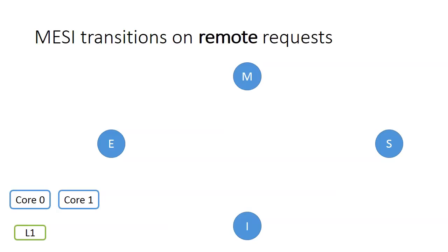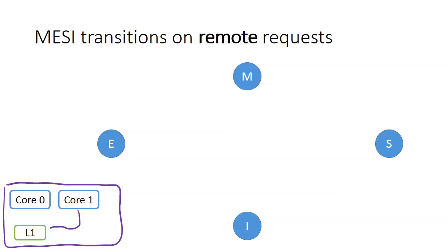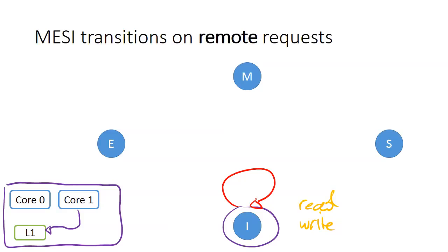Now let's see the transitions of the MESI protocol when the cache line receives coherence events from a remote core. Imagine that core 1 is performing operations that trigger coherence messages to a cache line in the L1 of core 0. Starting with the invalid state, it doesn't matter whether core 1 wants to read or write, because the data are invalid, so the cache line remains in the invalid state and does not need to respond to any coherence messages.